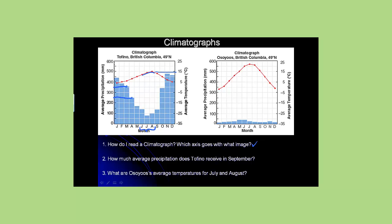Here's a question. How much average precipitation does Tofino receive in September? You would go to Tofino's climatograph, find September, and then read from the data bar. Try and make your lines as straight as possible, and find that Tofino receives an average of 145 millimeters of rain in September.